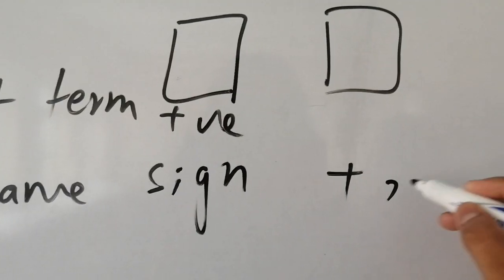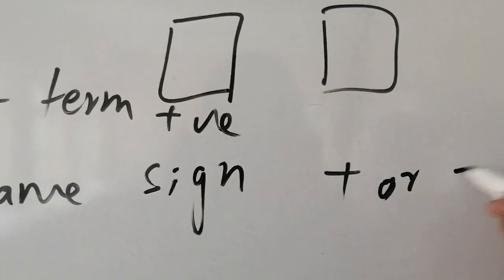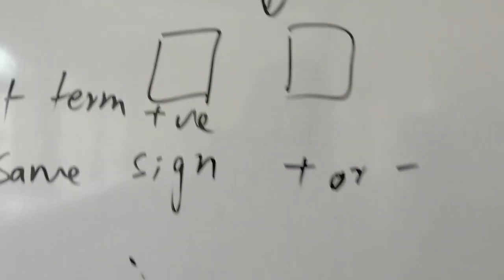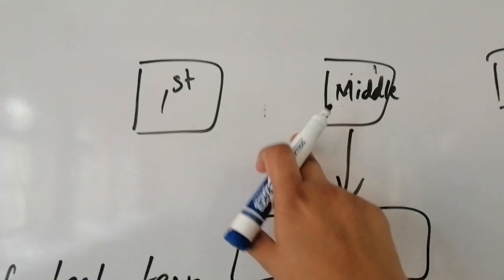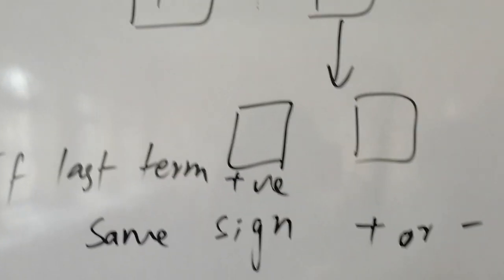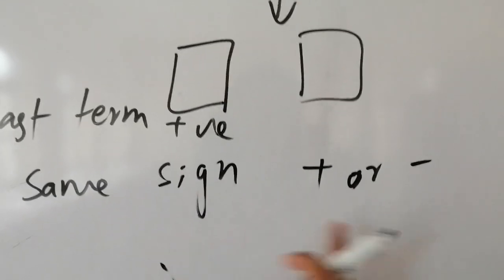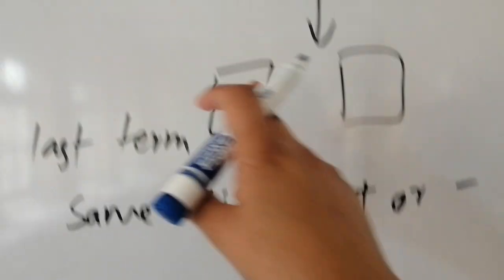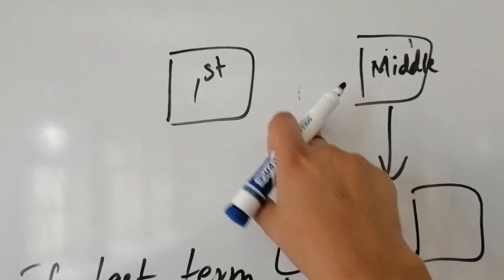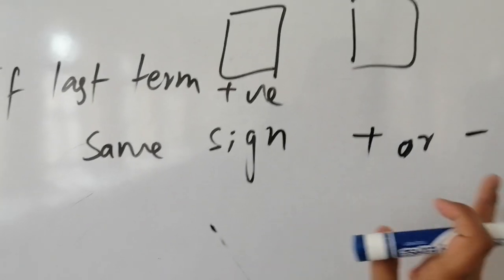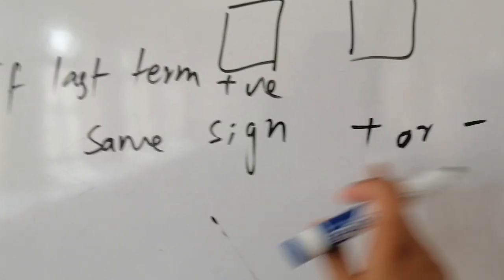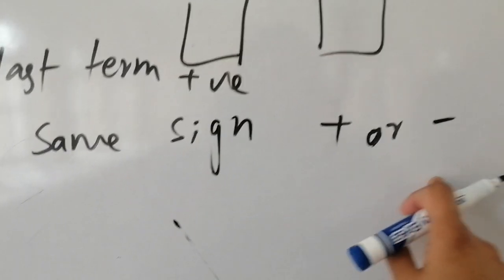Whether both terms are positive or negative depends on the middle term. If the middle term is plus, then the two terms will both be plus. If the middle term is minus, then the two terms will both be minus.